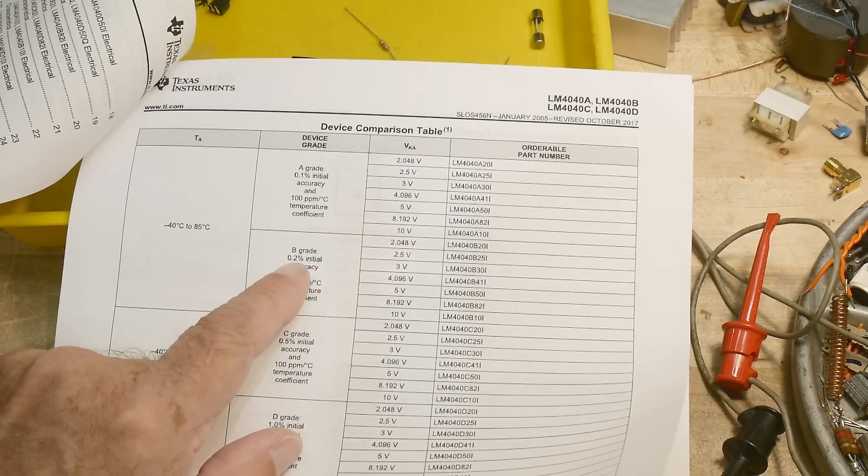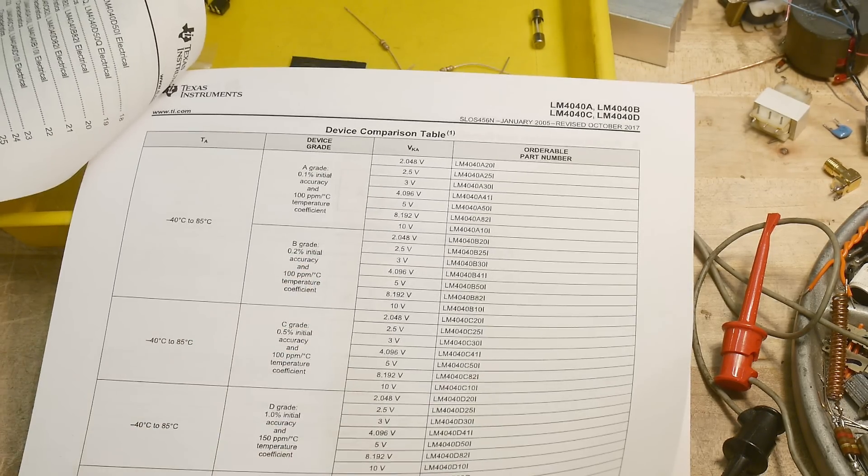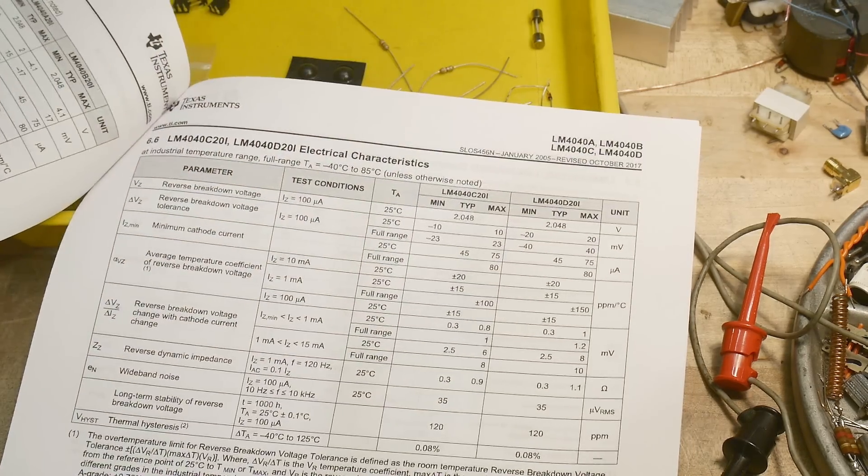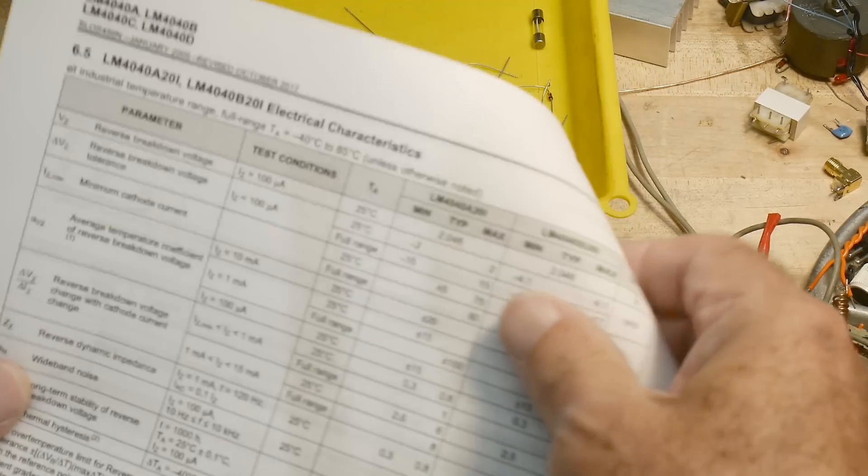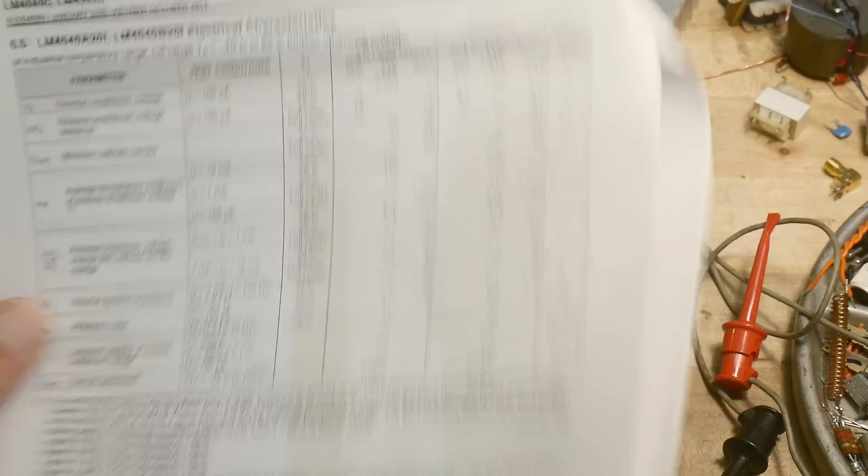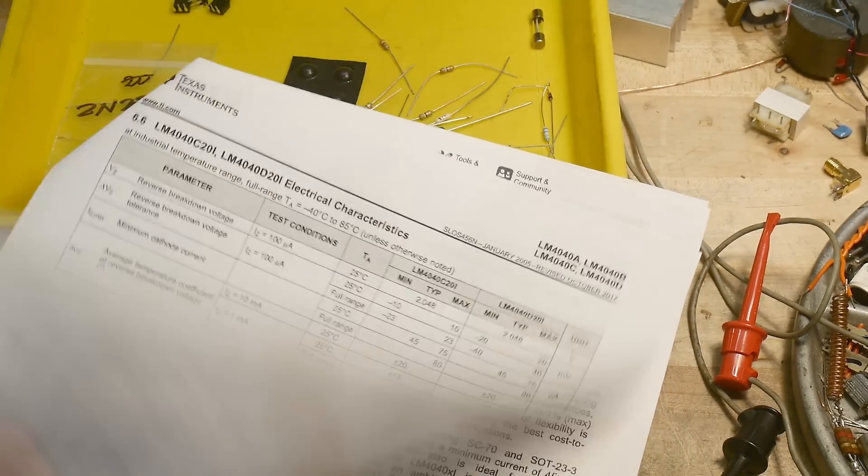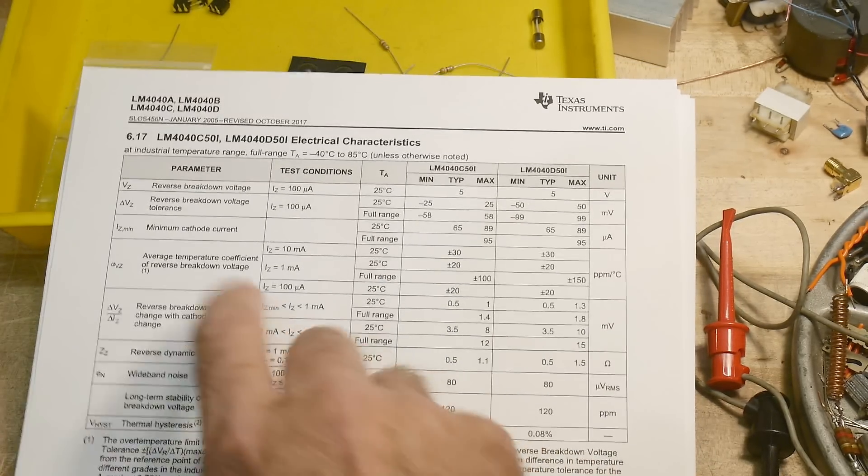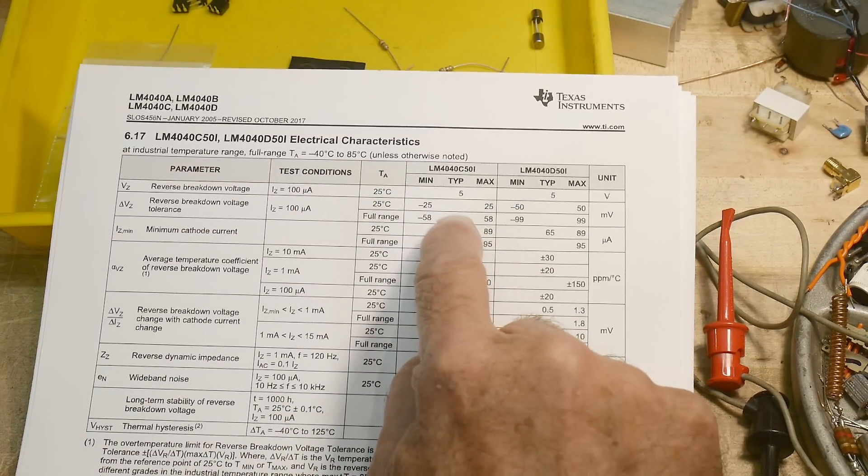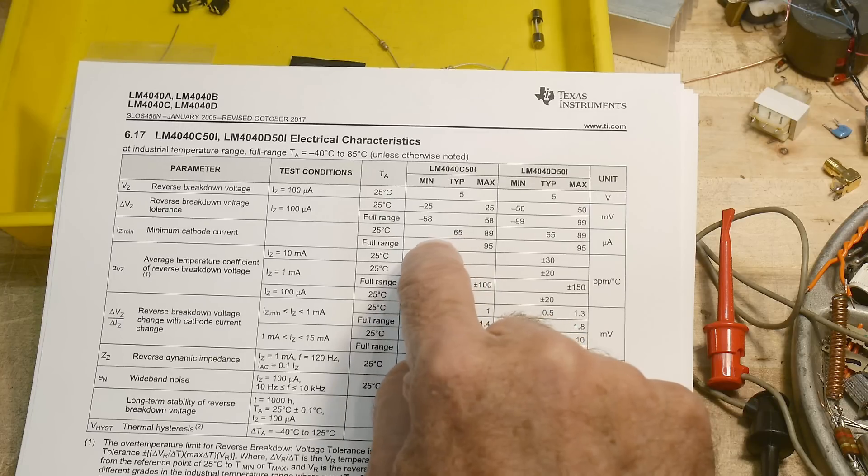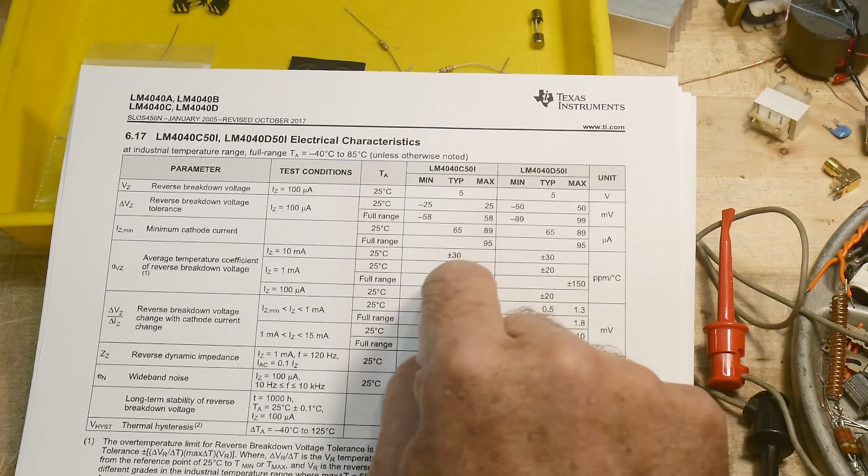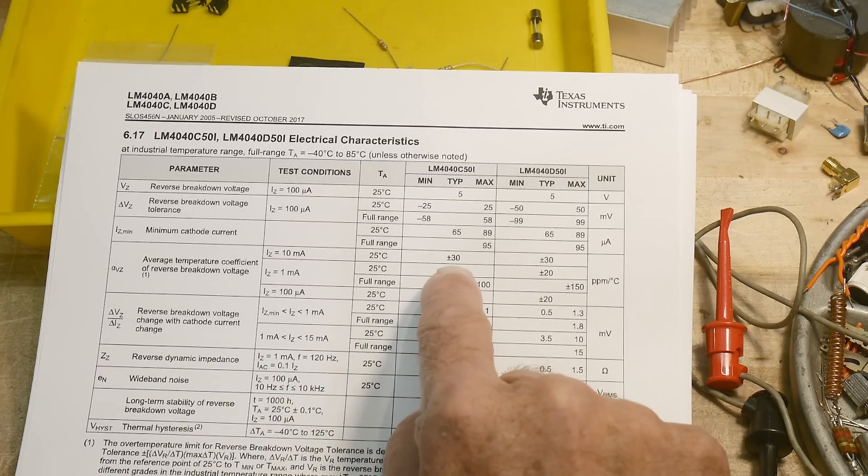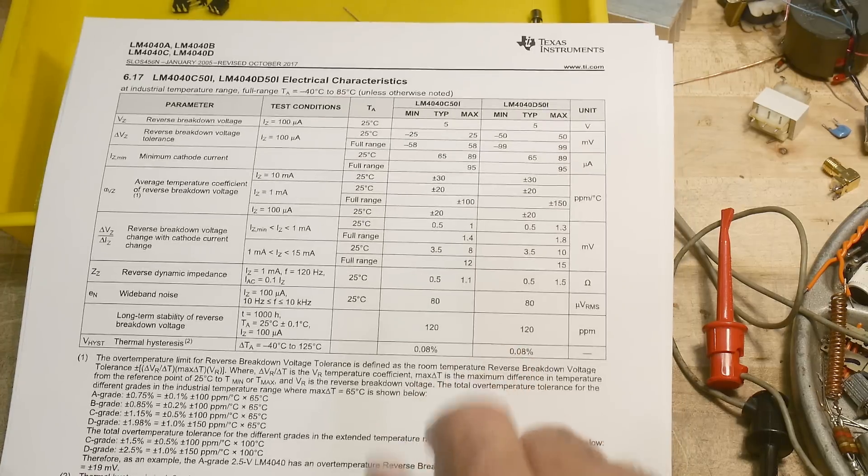It says B grade, 0.2% initial accuracy, and then 100 ppm per degree C. Okay. Let's see. There's breakdown test. This is for a different one. These are for the wrong parts. Let's get a five volt part. Here's a five volt part. Let's do this one. Okay. So five volts breakdown at a test. They tested 100 microamps. It's good to plus minus 25 millivolts. Maximum cathode current, 65 microamps. Then they test the temperature coefficient at 10 milliamps, 30 ppm, breakdown, wide band noise. So yeah, it's a pretty cool part.